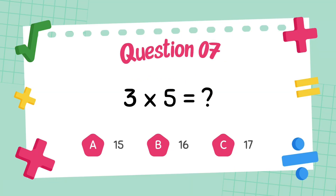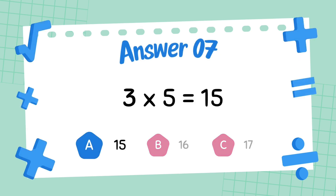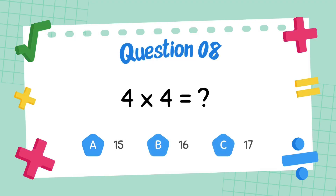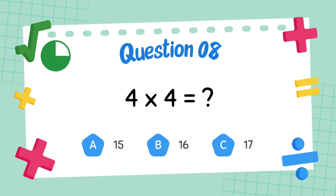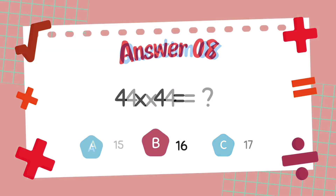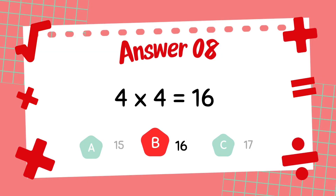What is 3 multiply 5? The answer is 15. What is 4 multiply 4? The answer is 16.